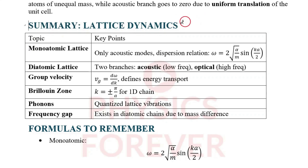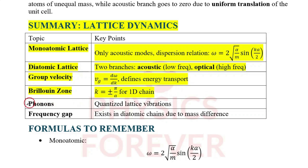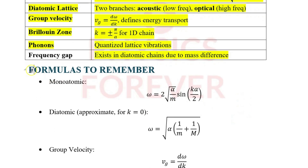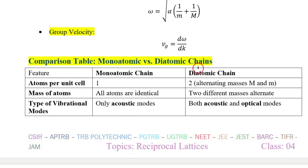Summary of lattice dynamics: For the monoatomic lattice, only acoustic modes are present and the dispersion relation is ω = 2√(α/m) · |sin(ka/2)|. For the diatomic lattice, two branches exist — acoustic and optical. Group velocity and Brillouin zone extend from −π/a to +π/a for one-dimensional chains. A phonon is a quantized lattice vibration. A frequency gap exists in the diatomic chain due to the mass difference.